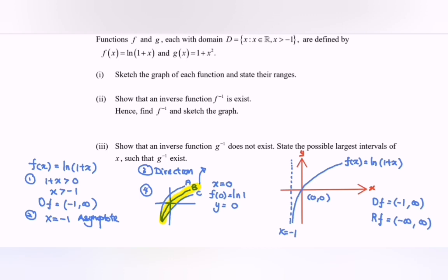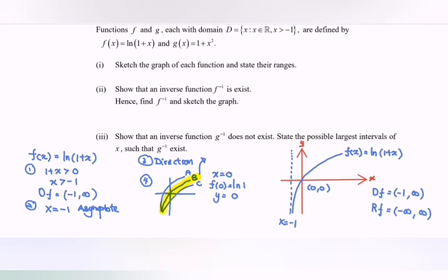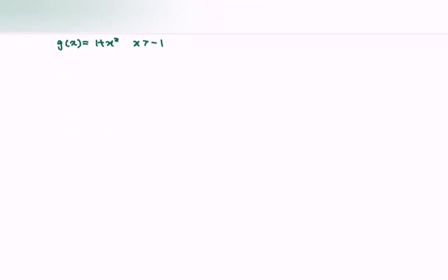Next, we focus on g(x). Referring to the function, we have g(x) equal to x squared plus 1. So it's a quadratic graph. The shape will be a U-shape.